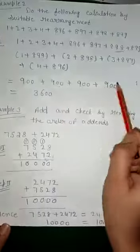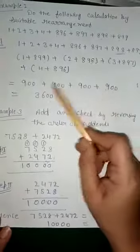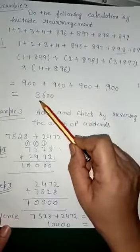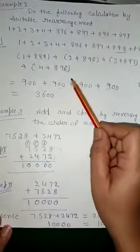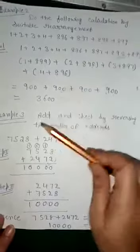Now we add all the group results: 900 + 900 + 900 + 900 = 3,600. This is the answer to this sum.